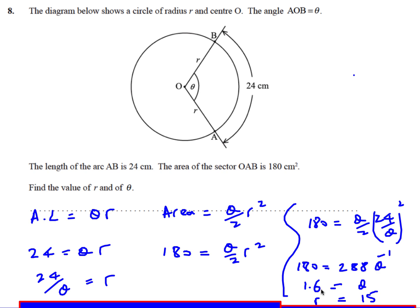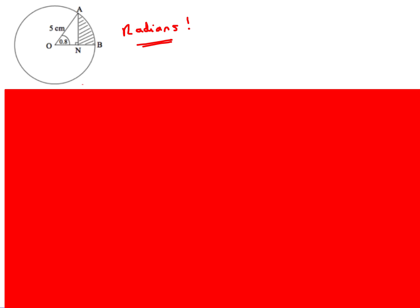With θ = 1.6, substitute back: r = 24 ÷ 1.6 = 15. If you're unsure how to handle θ⁻¹, just rewrite it as 1/θ and rearrange from there.